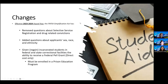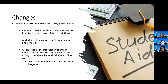Some other changes effective in the award year: the FAFSA Simplification Act has removed questions about selective service registration and drug-related convictions. It added questions about applicant's sex, race, and ethnicity, and students have the option of putting 'prefer not to answer.' Incarcerated students in federal and state correctional facilities are given the ability to receive a federal Pell Grant, but they must be enrolled in a prison education program.